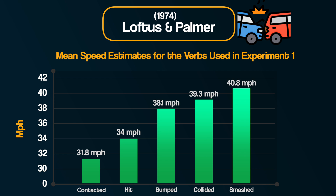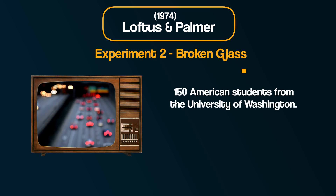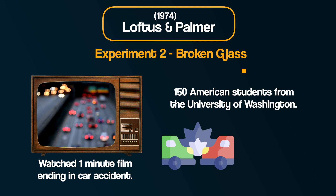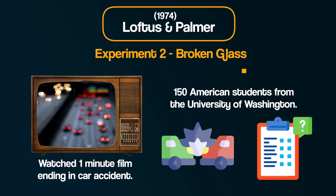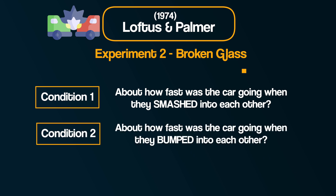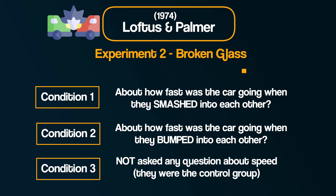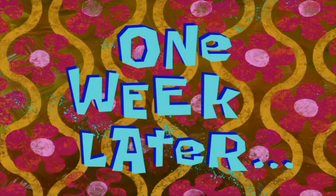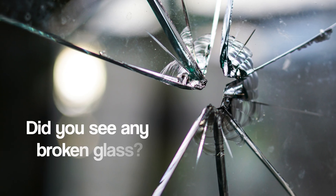In their second experiment, 150 students were shown a one-minute film ending with a multiple car accident. They were then given a questionnaire — first asking them to describe the accident in their own words, then answering specific questions. The critical question was again about the speed of the vehicle, but this time with three versions: 50 participants were asked how fast the car was going when they 'smashed' into each other, 50 were asked about 'bumped,' and 50 were not asked any question about speed — the control group. One week later, participants were asked questions about what they had watched, with a critical hidden question among them.